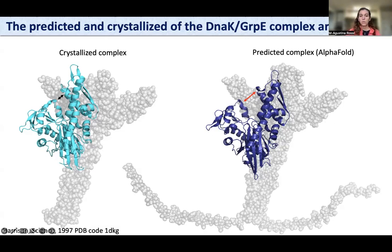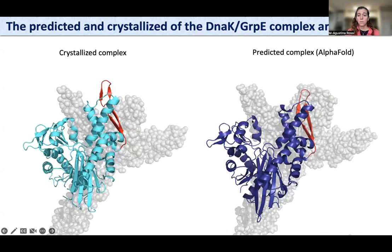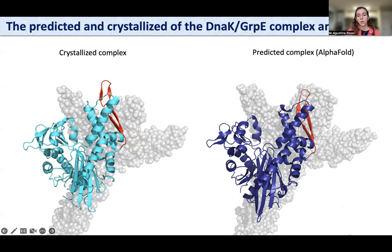In the predicted complex, subdomain 2B is more open, forming a pore or hole in the nucleotide binding site. This opening may arise from the interaction of a beta-hairpin with GrpE. This beta-hairpin interacts with GrpE in the predicted complex, but we have not seen this interaction in the crystallized complex. So we want to test whether this complex is relevant in solution.